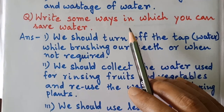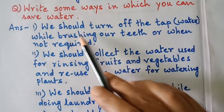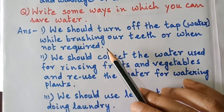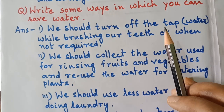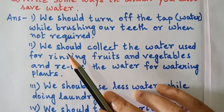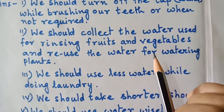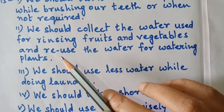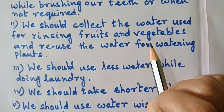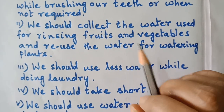The next question is: write some ways in which you can save water. First point: we should turn off the tap while brushing our teeth or when not required. Second point: we should collect the water used for rinsing fruits and vegetables and reuse that water for watering plants.